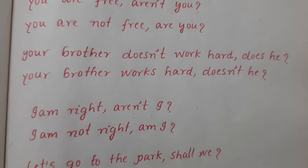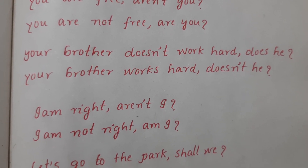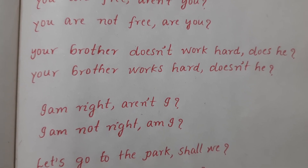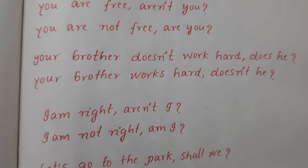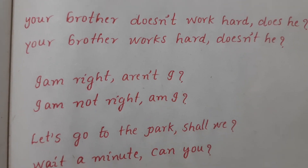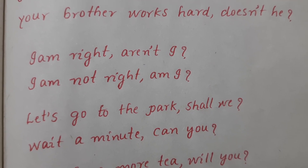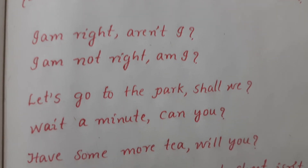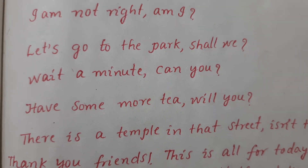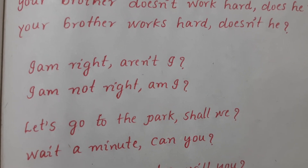Let's see some exceptions which don't follow the standard rules. 'I am right, aren't I?' — not 'am I?' We must use 'aren't I' for positive 'I am' statements. 'I am not right, am I?' Other exceptions to remember: 'Let's go to the park, shall we?' — 'Wait a minute, can you?' — 'Have some more tea, will you?' — 'There is a temple in that street, isn't there?' These exceptions must simply be memorized.